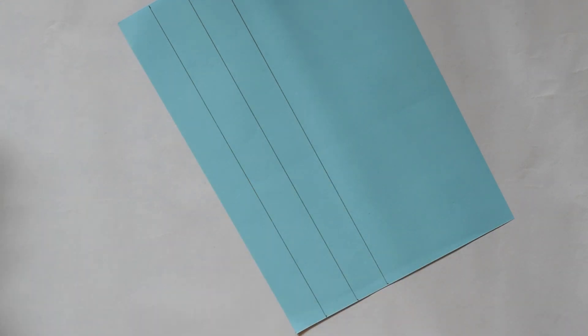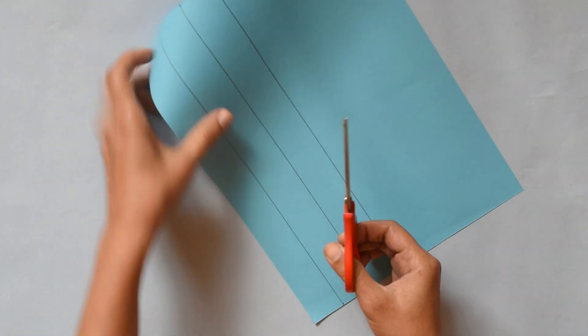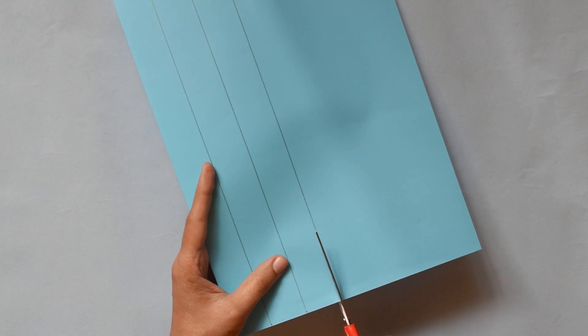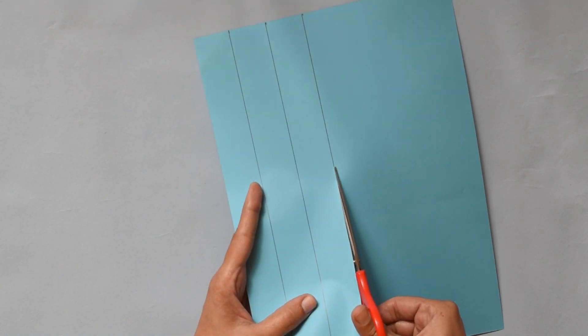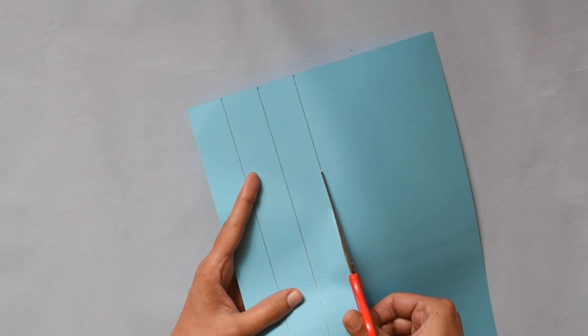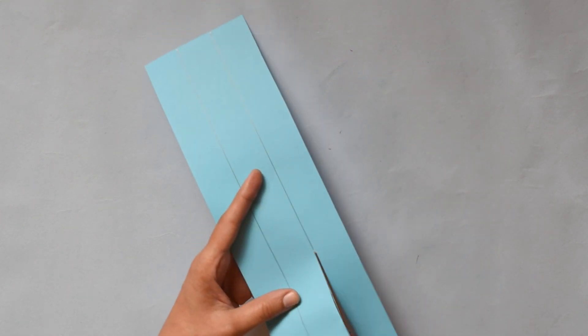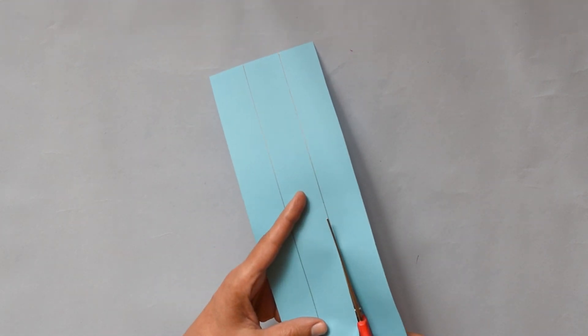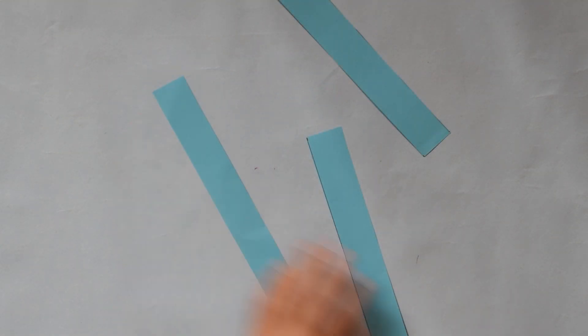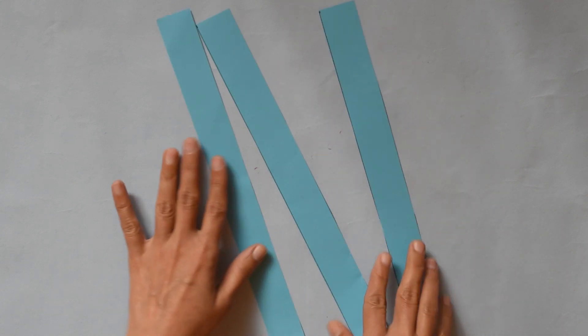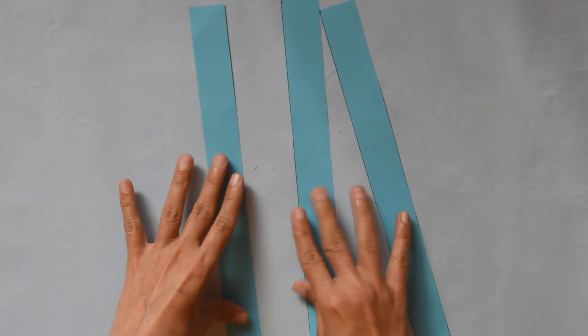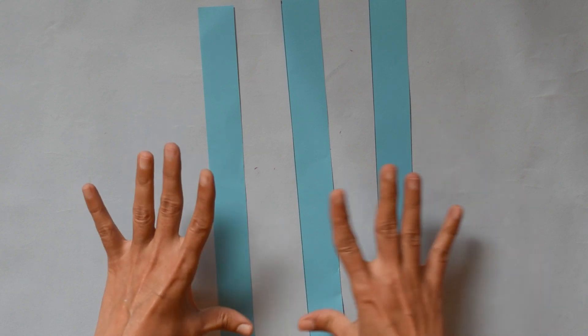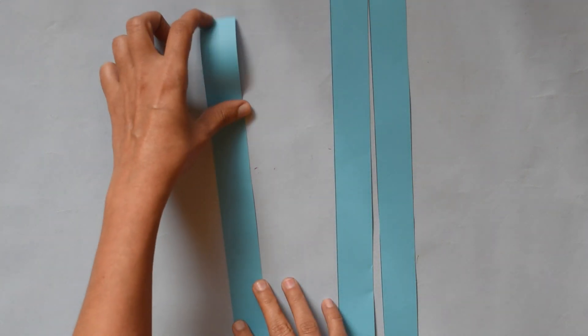Now simple part. Cut that strips. Now here we have 3 strips. Now what we are going to do.